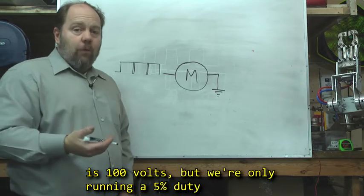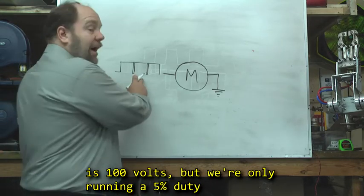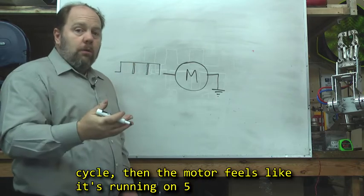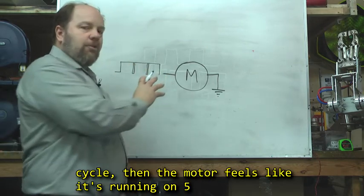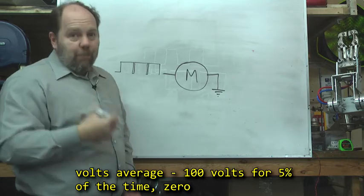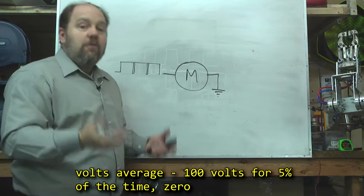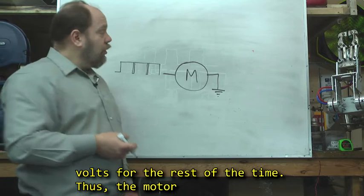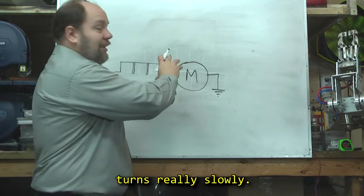So if our power is 100 volts, but we're only running on a 5% duty cycle, then the motor feels like it's running on 5 volts average. 100 volts for 5% of the time, 0 volts for the rest of the time. Thus the motor turns really slowly.